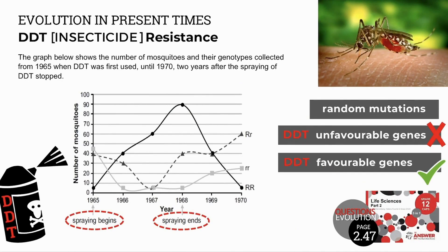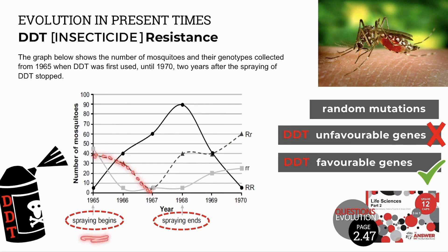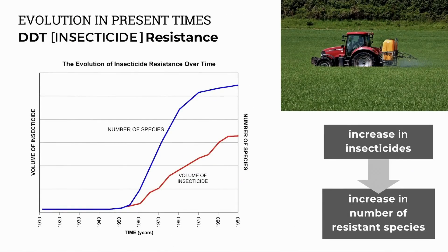Here's an example of a data response graph question about insecticide resistance. The graph shows the number of mosquitoes with different genotypes over time, showing the dates of DDT spraying. Some genes are unfavourable to surviving DDT and some are favourable. Looking at genotype Rr, numbers initially decrease after spraying, then after two years start increasing as resistance to the insecticide develops. Another graph shows how the number of resistant species increases with an increase in the volume of insecticides used over time.